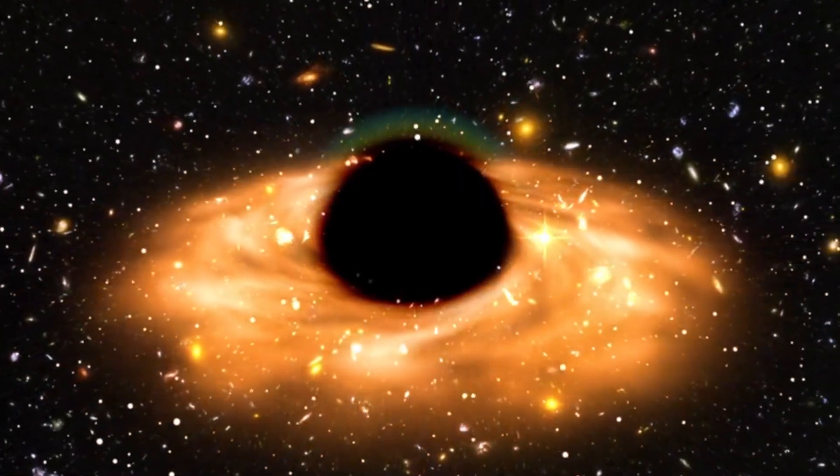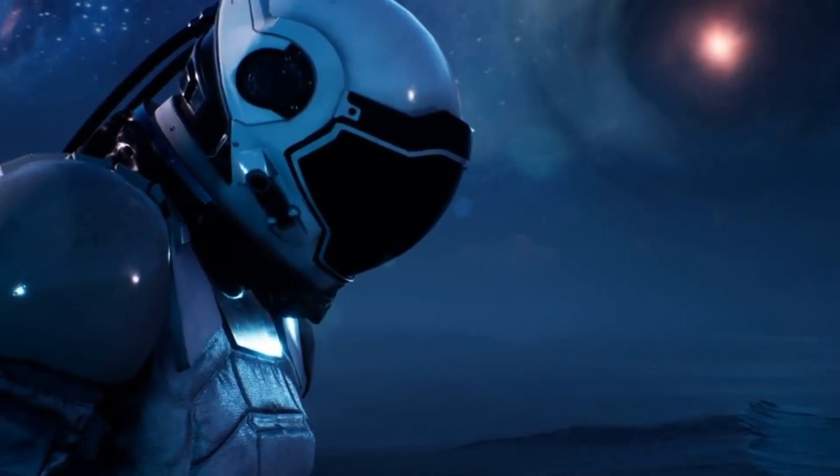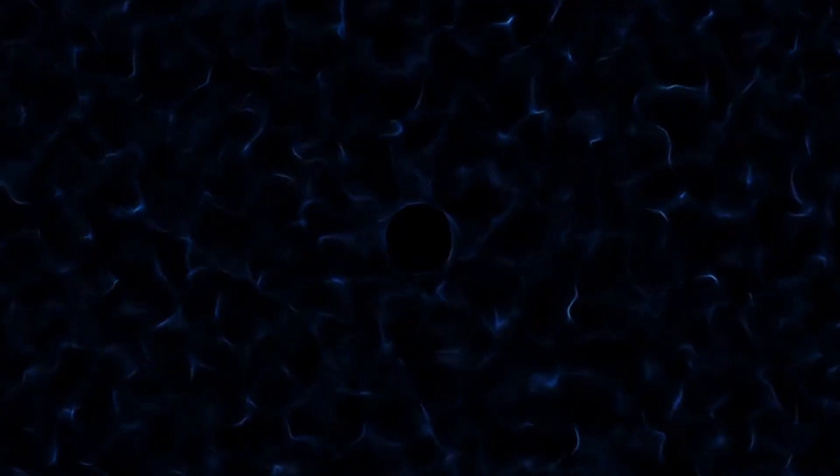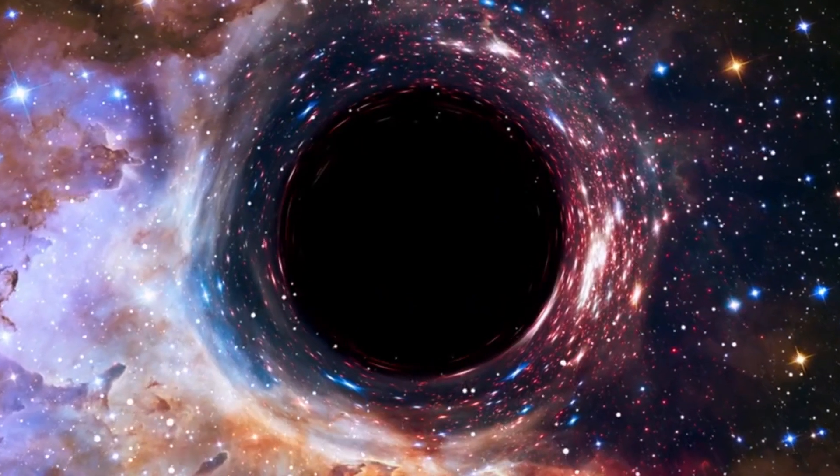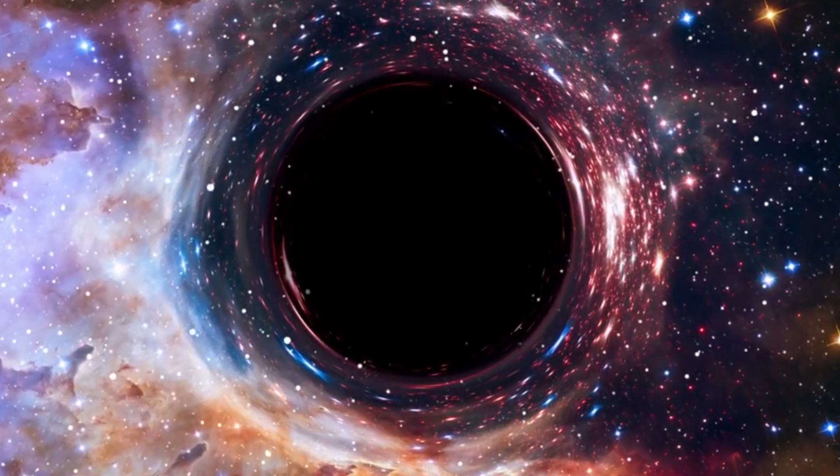Black holes are notorious for their insatiable appetite, devouring anything that strays too close to them. This particular black hole had just finished a massive cosmic feast. When matter falls into a black hole, it is heated to extraordinary temperatures, sometimes reaching millions of degrees. This intense heat generates x-rays and other forms of radiation, creating a glowing corona around the black hole, a brilliant halo of light visible to telescopes.